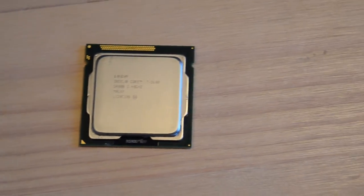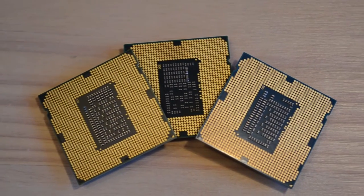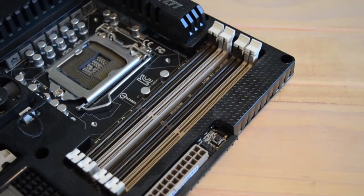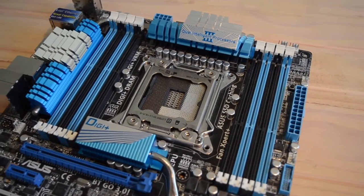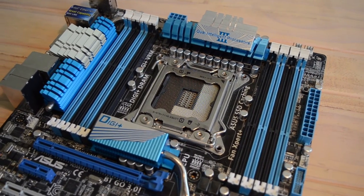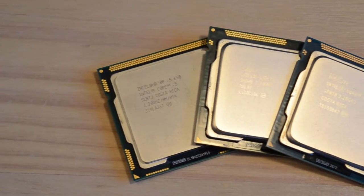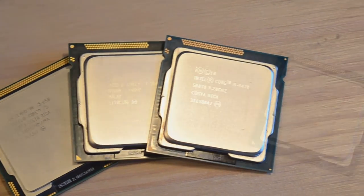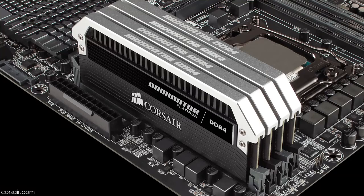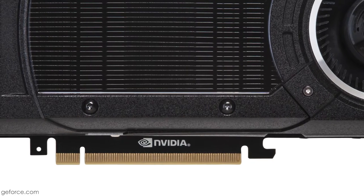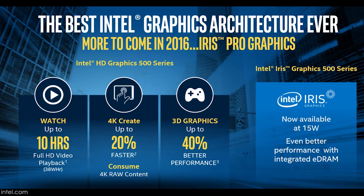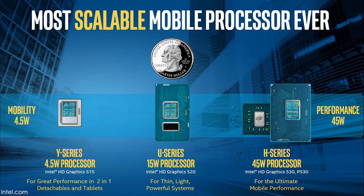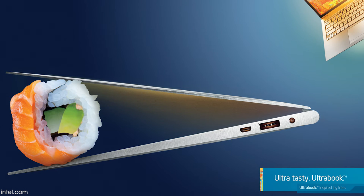With the next tock, Sandy Bridge, launched in 2011, we see improved onboard graphics and two new sockets: LGA1155 for the mainstream and LGA2011 for the enthusiast and server market. Sandy Bridge features much improved clock-for-clock performance compared to Nehalem and Westmere. Since Sandy Bridge, not much has happened. We have seen new technologies such as DDR4, USB 3, Thunderbolt, PCIe Gen 3, and new storage standards like M.2 and NVMe, as well as better onboard graphics and improved power efficiency, which has allowed for more cores on the desktop and server and for thin-and-light laptops to become a thing.